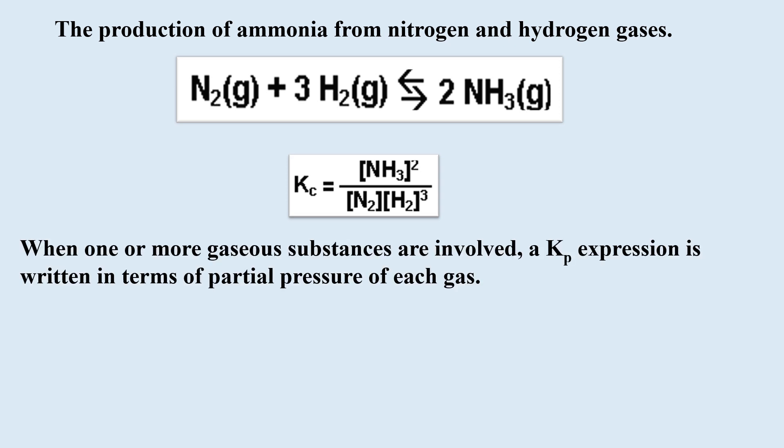When one or more gaseous substances are involved, a Kp expression is written in terms of the partial pressure of each gas. So, for the equation where nitrogen gas plus hydrogen gas forms ammonia, we write the following. The Kp is equal to the partial pressure of ammonia squared divided by the partial pressure of the nitrogen gas times the partial pressure of the hydrogen gas cubed.